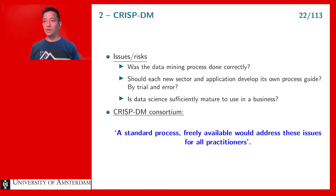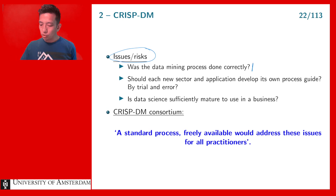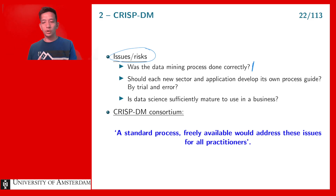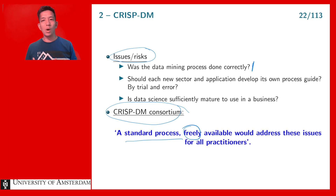Everyone started experimenting with data science and data mining to solve their business problems, but this brought several risks because the field was not yet mature. People did not know whether they were doing data mining correctly or whether they could trust the results. Different fields were trying different things, and the question arose: if something works for data mining in marketing, can we use it in the financial or pharmaceutical industry? That's why the CRISP-DM consortium was created — to establish a standard process for data mining that was freely available.